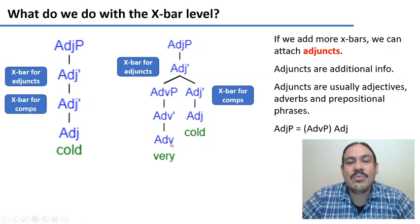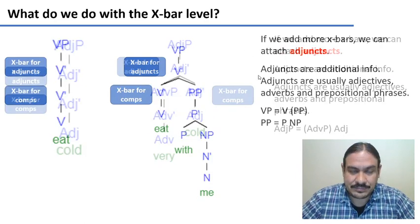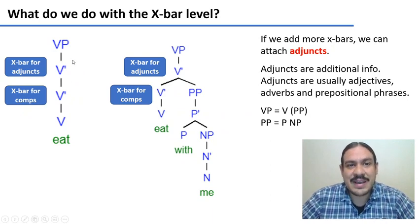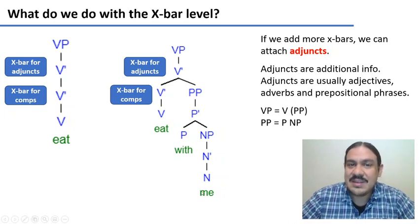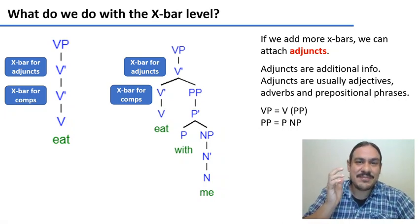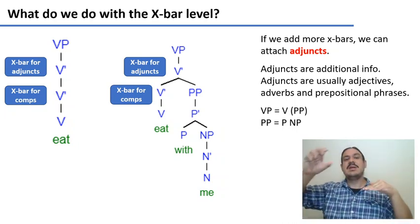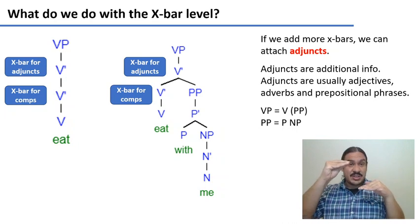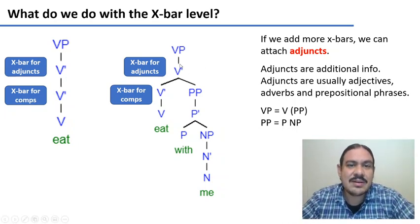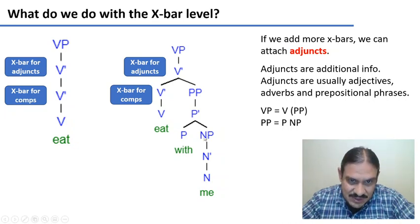You can see how it's one phrase inside of another phrase. Verbs can also take adjuncts. For example, in the phrase 'eat with me,' the phrase 'with me' is not demanded by the word 'eat.' It is optional information that you use only to describe what kind of eating you're doing. So 'with me' is an adjunct, and as you can see, we put it in an additional X-bar for the adjunct. From here, we project a prepositional phrase with its own head 'with,' and prepositional phrases need complements, so this one projects the complement 'me' — 'with me.'